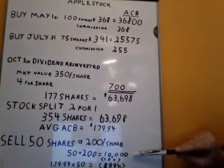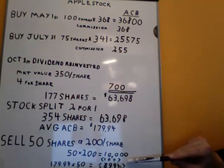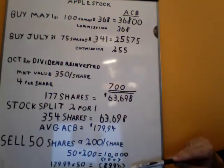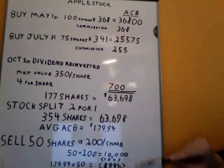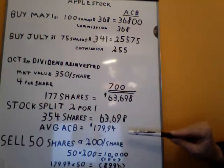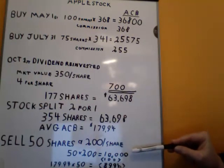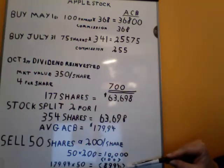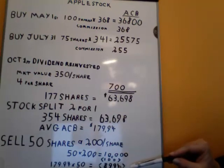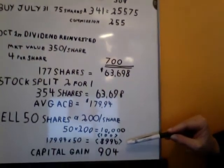We got 50 times 200 is $10,000, less commission — it's about $100, which is 1% of $10,000. Then we deduct the ACB of 50 shares, where we calculated the new ACB based on all the transactions above at $179.94.